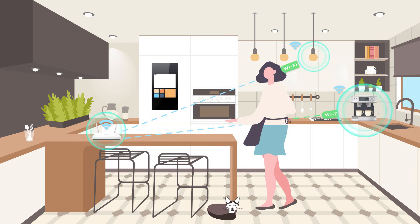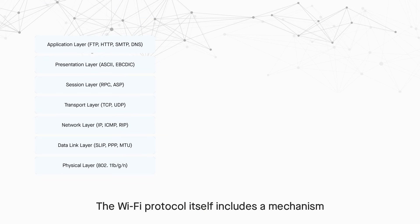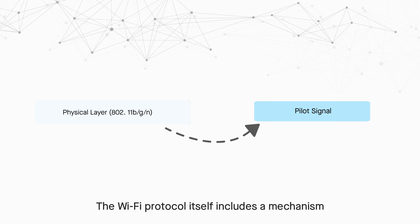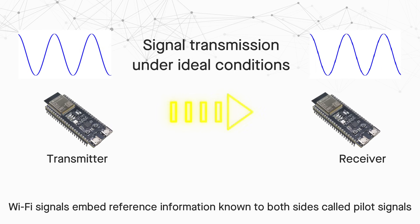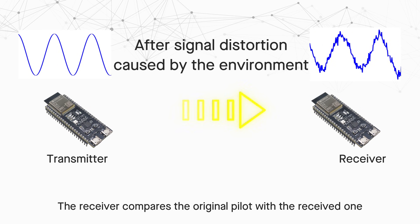When transmitting data, Wi-Fi signals embed reference information known to both sides, called pilot signals. The receiver compares the original pilot with the received one to determine how the environment has affected the signal.